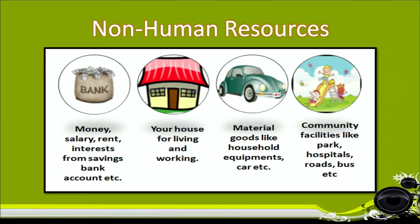Non-human resources can include money which you get from salary, rent, or interest from savings bank accounts. There is infrastructure in the form of a house for living and working. There are material goods like household equipment, cars, etc. There are also community facilities like parks, hospitals, roads, bus, etc.